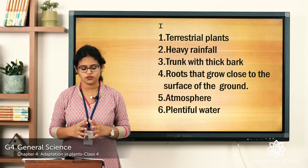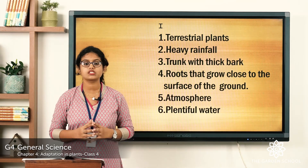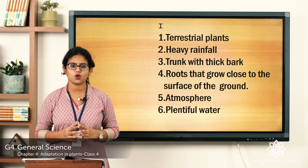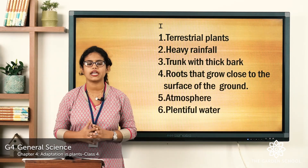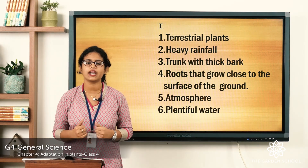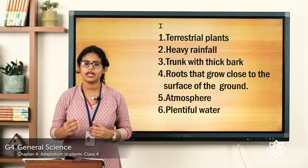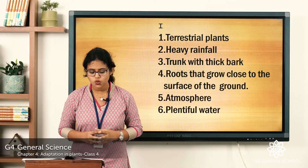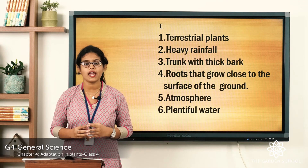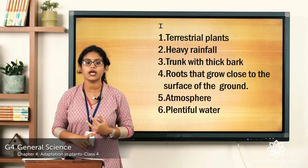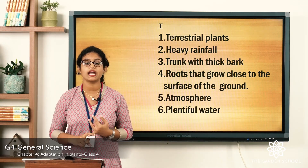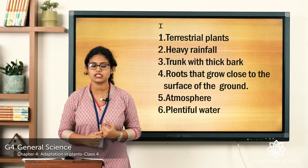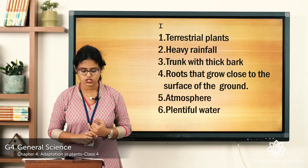Fourth: cactus plants have roots that grow close to the surface of the ground. They have long roots that help them to collect water from larger areas. Fifth: roots of mangrove trees absorb air from the atmosphere. So the answer is atmosphere.